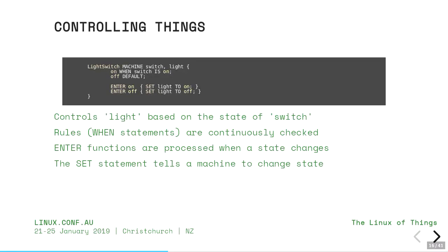Here is an example of a light. Lights have a switch, and we have a rule that says 'on when switch is on.' We turn the light on and stay in that state until somebody turns the switch off. The set commands in 'enter on' and 'enter off' actually turn the light on and off. I also have a concept called guards, which I use to protect against damage to machinery — extra code that forms a layer below, actually interfacing to the real hardware.